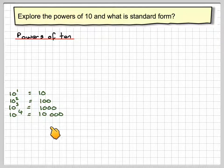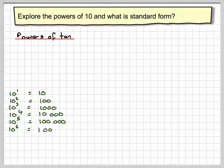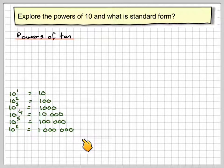10 to the power of 4 is 10,000, 10 to the power of 5 is 100,000, and 10 to the power of 6 is 1,000,000.